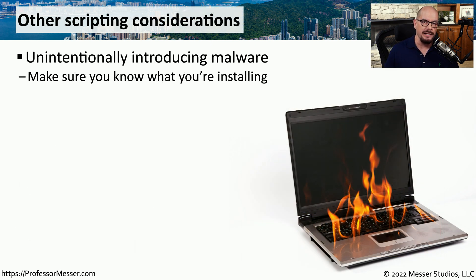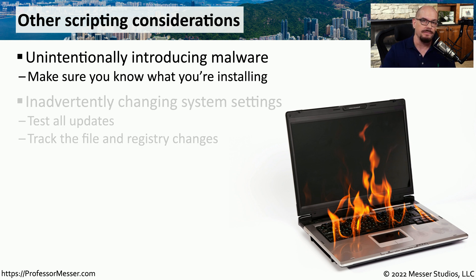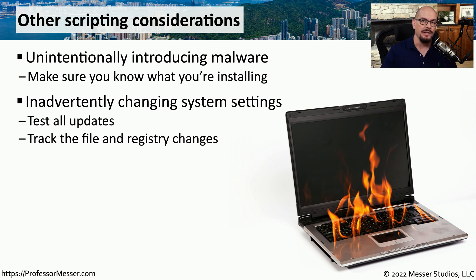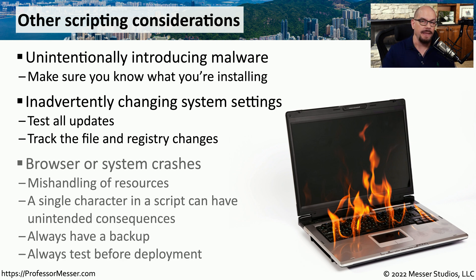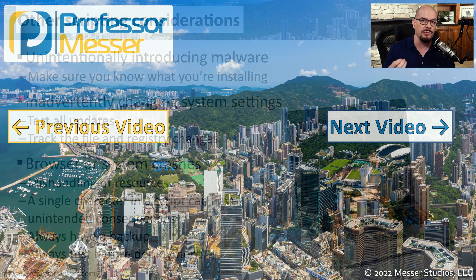Although scripting provides us with extensive automation, we still have to be very careful about what we're scripting. For example, if we're performing an application rollout, we want to be sure that the executable we're sending out is safe and free from any malware — you would not want to automate an installation that is effectively installing malware on everyone's system. You also want to test all scripts before they're rolled out; deploying a script that makes incorrect registry changes could create significant problems for other applications. Even a single incorrect character in a script could cause major issues. As with most things in IT, always have a backup, and before deploying any script in production, it should always go through a testing process.